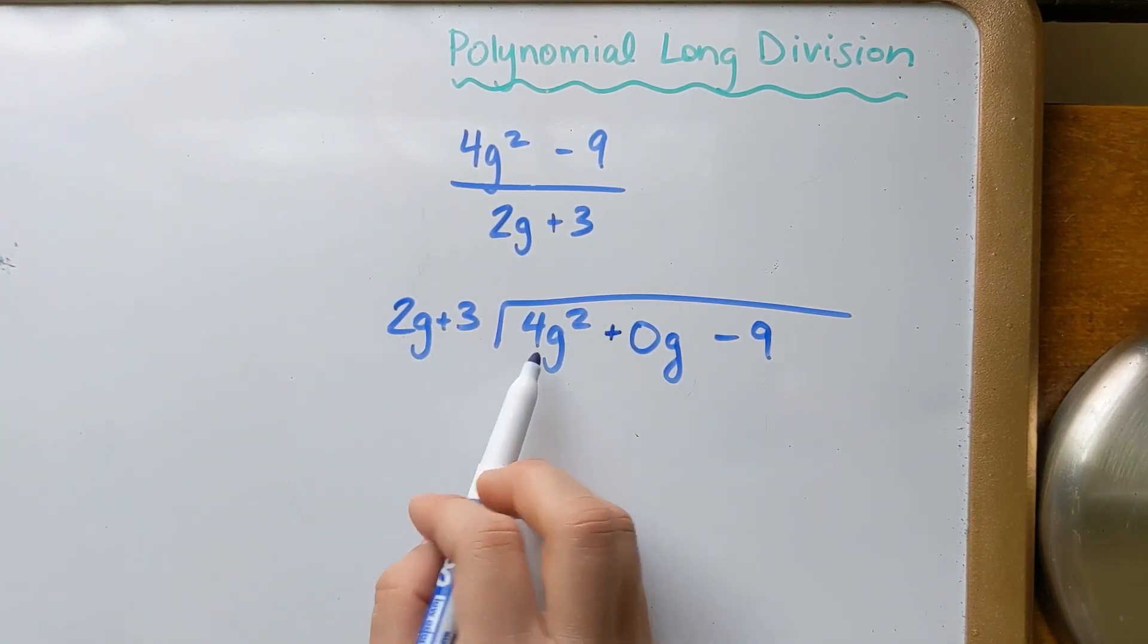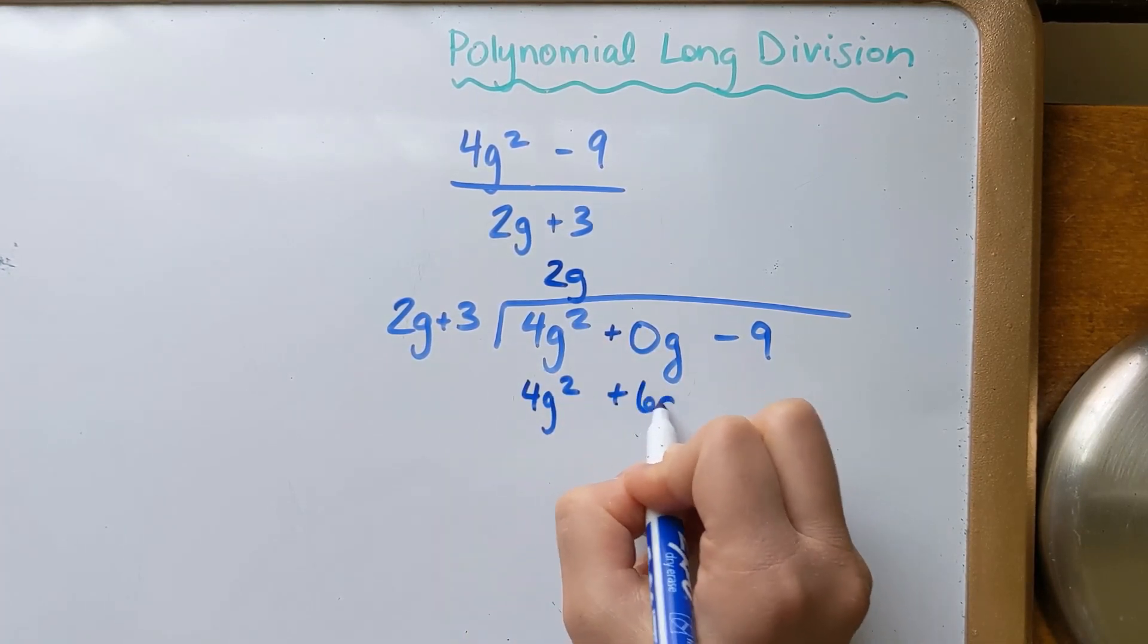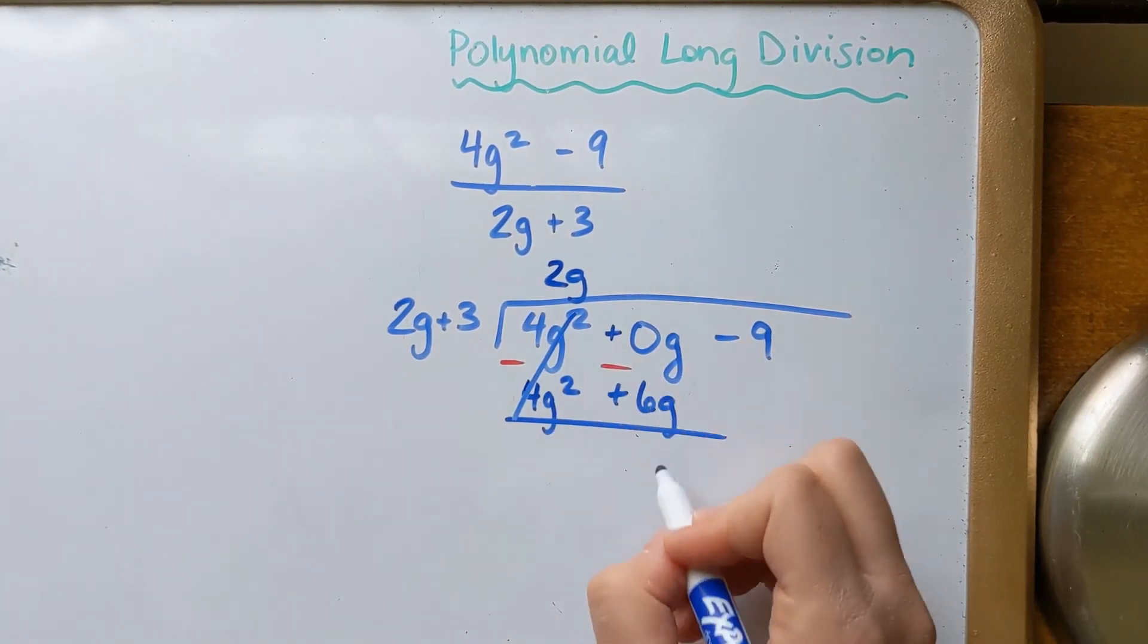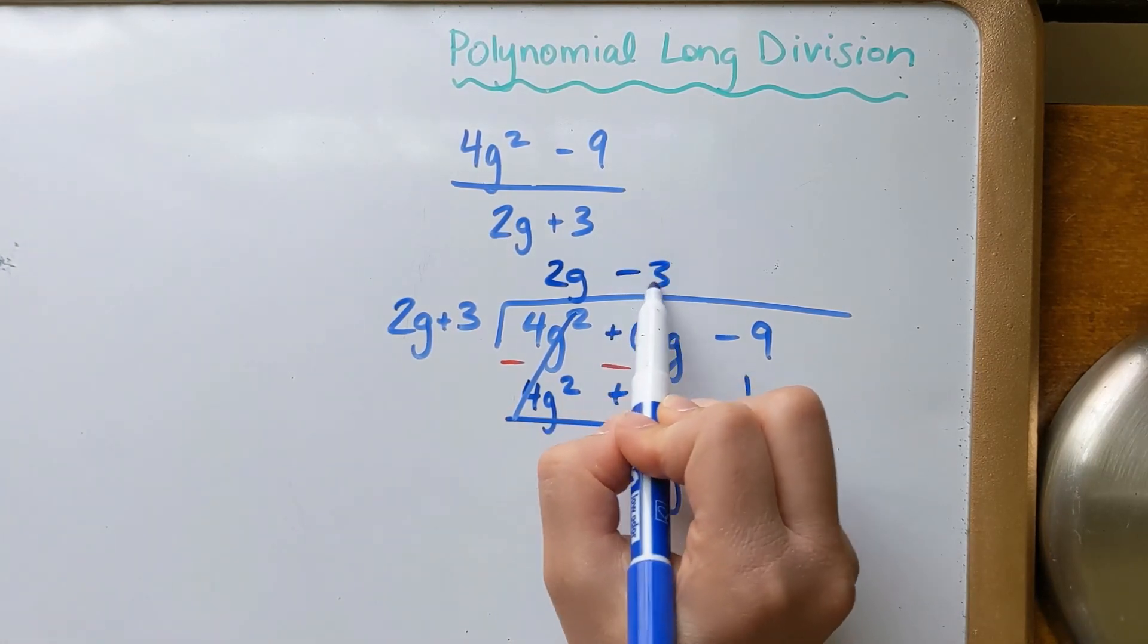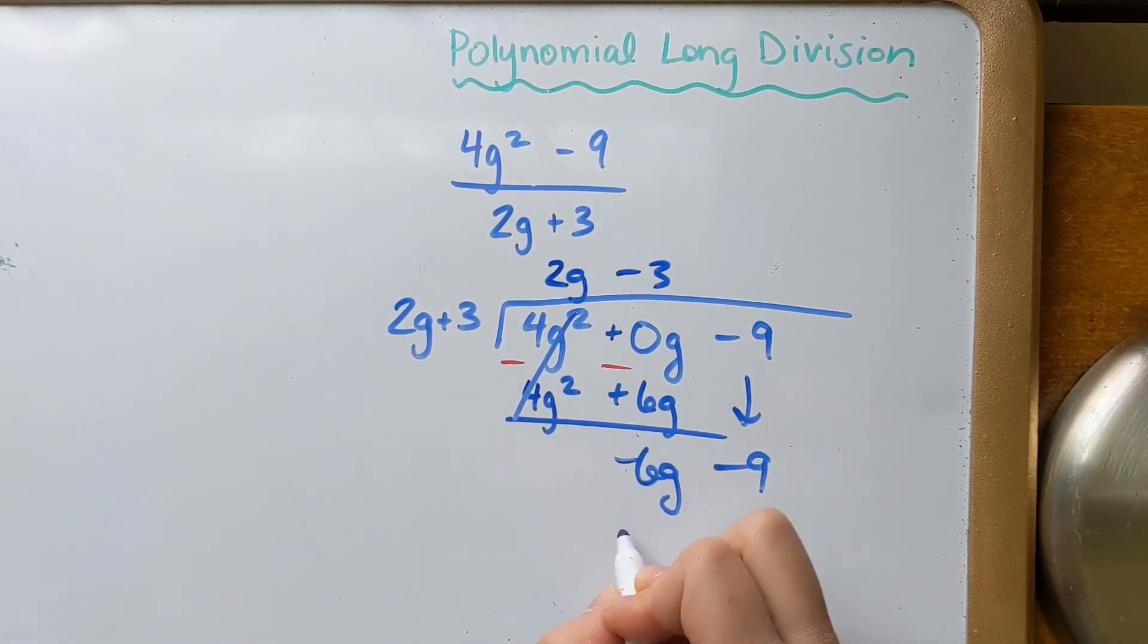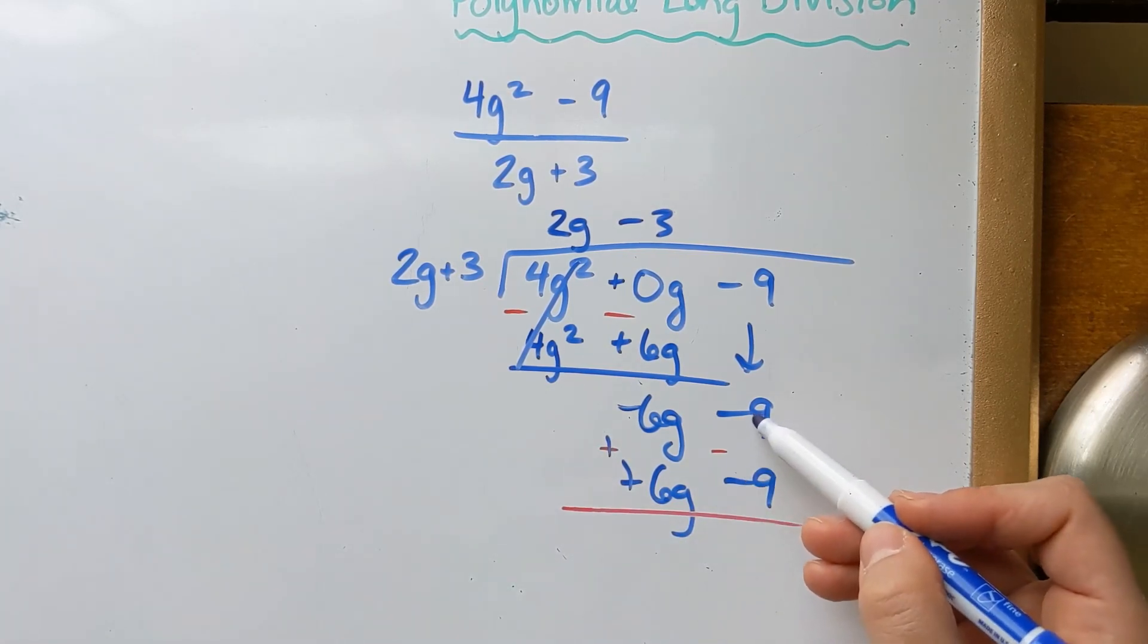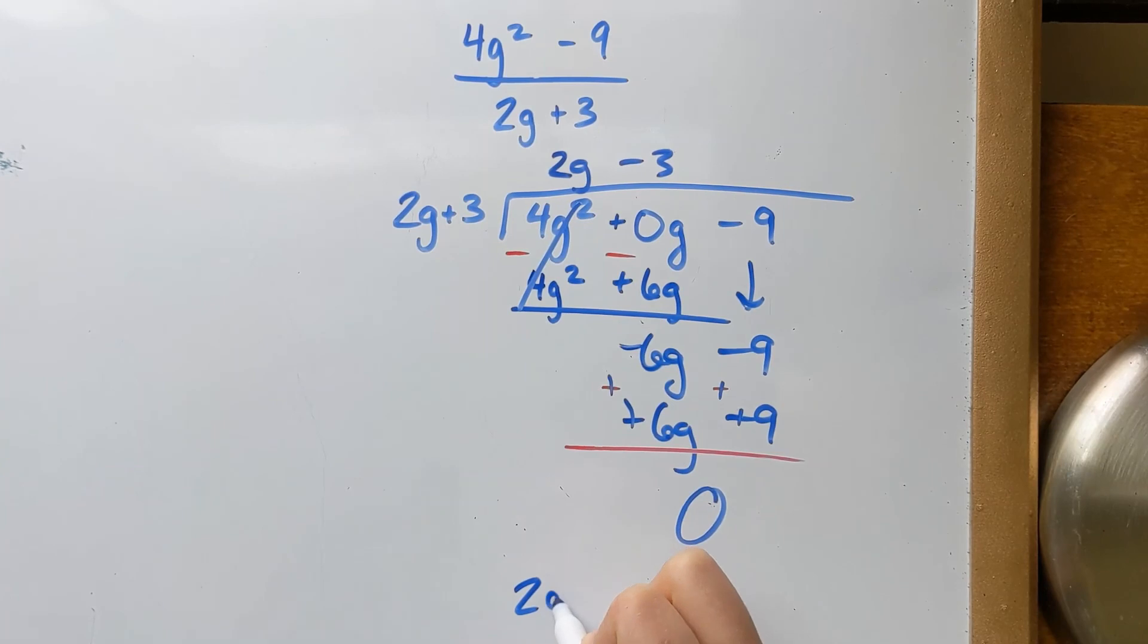Okay, 2g times 2g would make 4g squared. So I'm going to redistribute this, 4g squared plus 6g, and then I'm going to subtract. Okay, I would get negative 6g, and I'm going to drop down this negative 9. Now, 2g times what makes negative 6g? I would say that that would be negative 3. Okay, redistribute, negative 6g minus 9, and looks like this one's going to work out with no remainder at all. So negative 6g minus negative 6g, so plus positive, that would be 0. Negative 9 plus positive 9, again, 0. So no remainder there. I could say that my answer is just 2g minus 3.